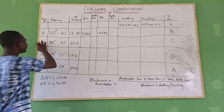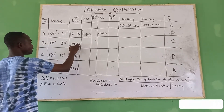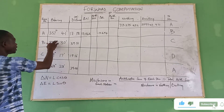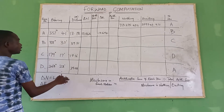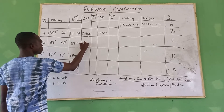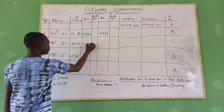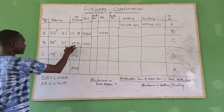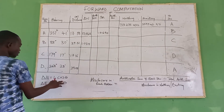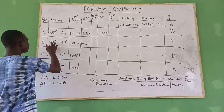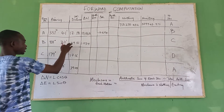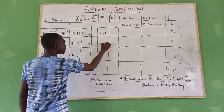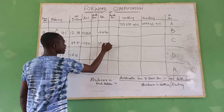For the next station, station B, we have delta northing: 39.51 × cos(88° 30'), which gives us 1.034. For delta easting, we have 39.51 × sin(88° 30'), which gives us 39.496.